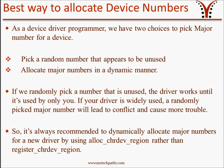Coming to our second topic: best way to allocate device numbers. As a device driver programmer, we have two choices for picking a major number — pick a random number that appears unused, or allocate major numbers dynamically. If you randomly pick a number that is unused, the driver works only as long as it is used by you alone. If your driver is widely used, a randomly picked major number will lead to conflicts and cause major trouble. So it is always recommended to dynamically allocate major numbers for a new driver using alloc_chrdev_region rather than register_chrdev_region.